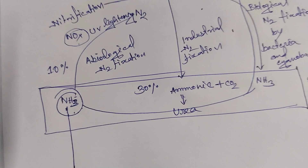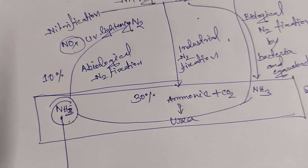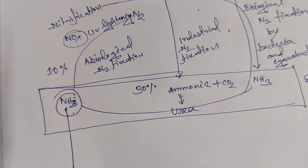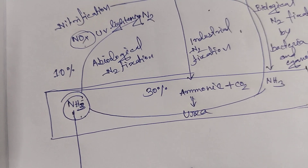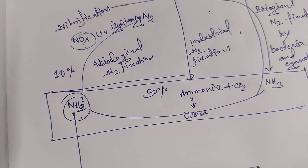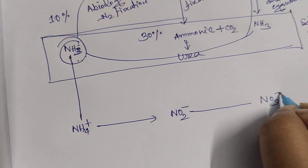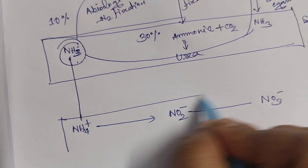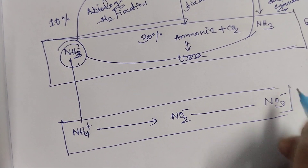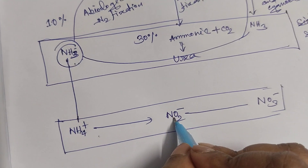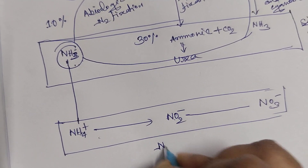Some ammonia is converted into ammonium radical, and this ammonium is converted into nitrite, and then this nitrite is converted into nitrate. The process of conversion of ammonia to nitrite and then to nitrate is called nitrification.